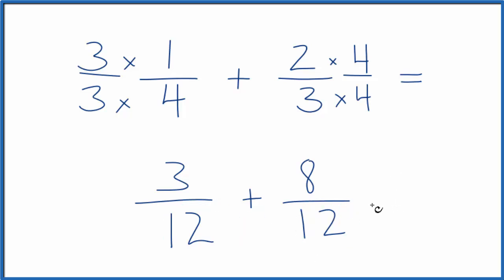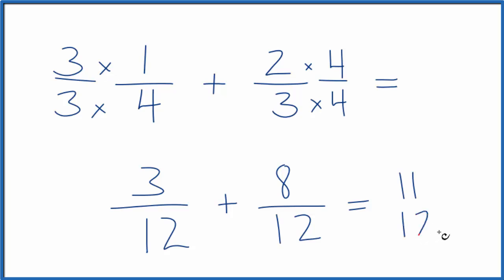We can add the fractions. Three plus eight, that's 11. 12, we just carry that across since that's our common denominator there. And one-fourth plus two-thirds, that's 11 twelfths.